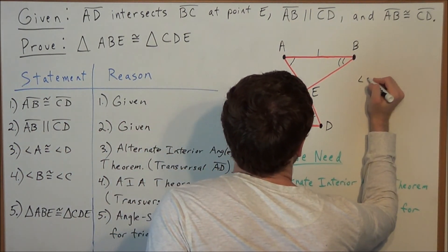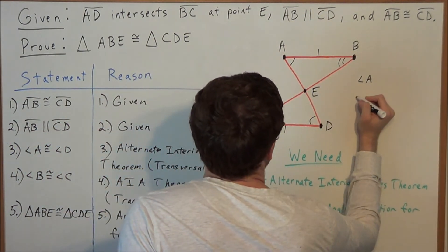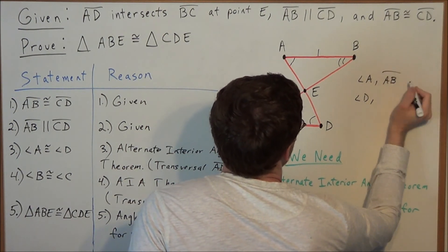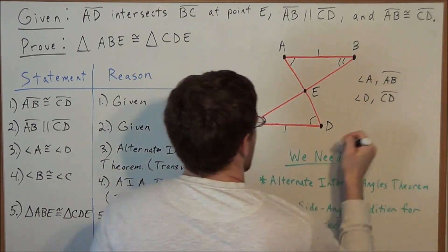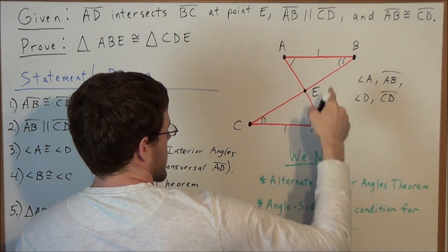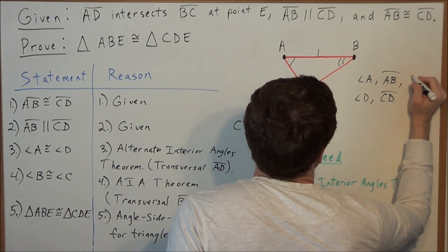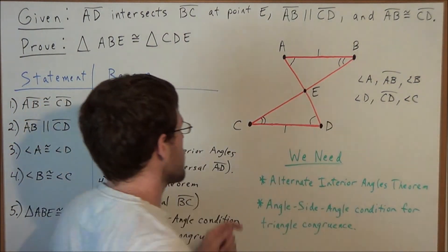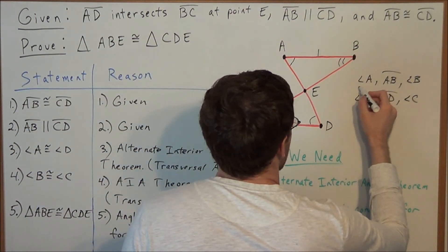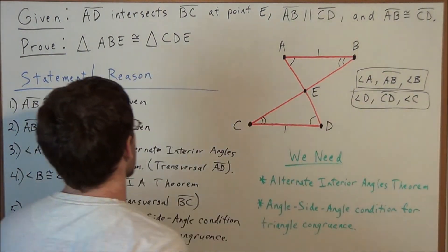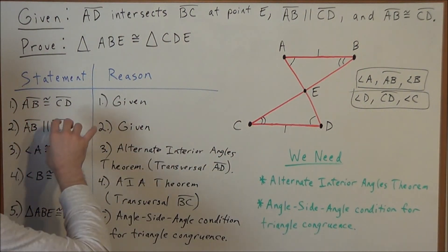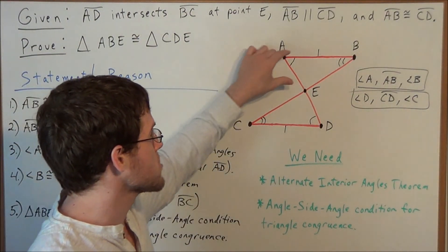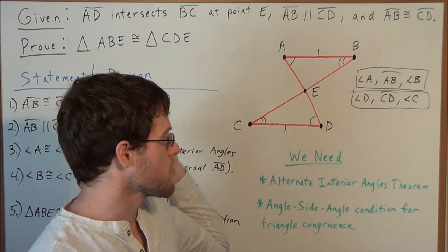In this case, we have angle A in triangle ABE and angle D in triangle CDE. Then we use side AB in triangle ABE and side CD in triangle CDE. And finally, the last angle in this angle-side-angle combination is angle B in triangle ABE and angle C in triangle CDE. We stated they shared a pair of congruent sides, then showed how both pairs of angles were congruent, building the angle-side-angle combination in both triangles.